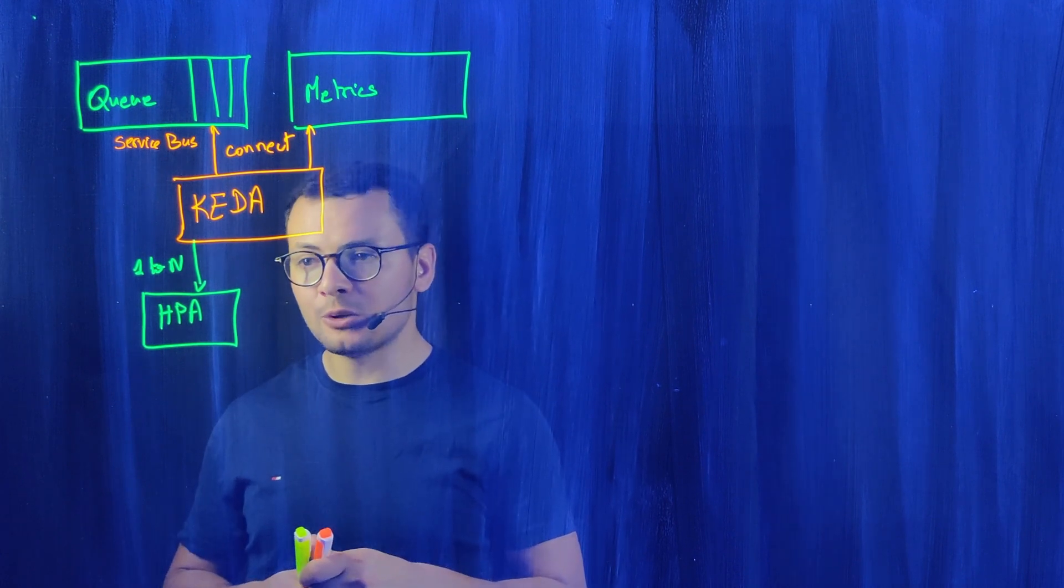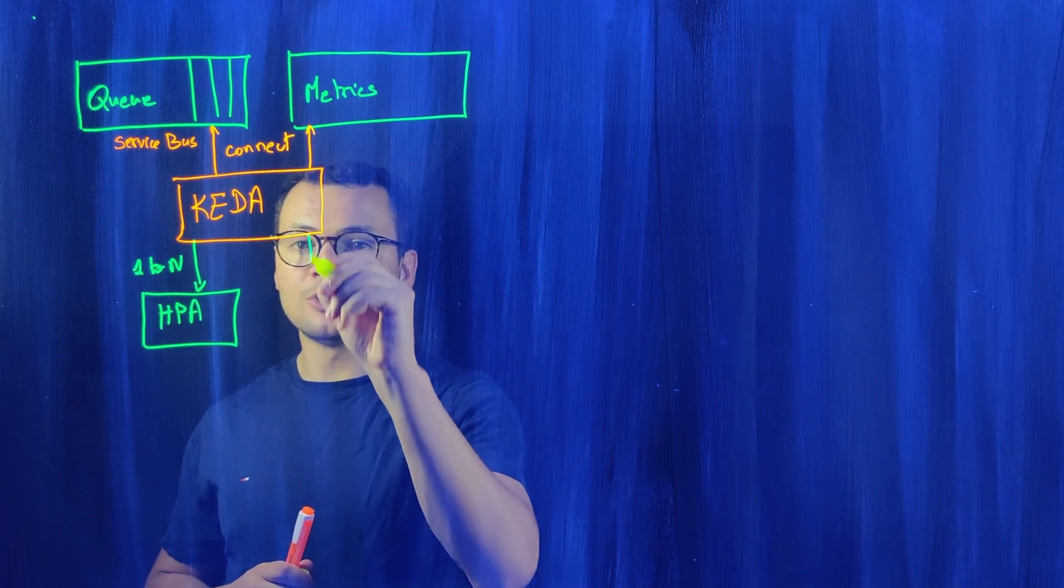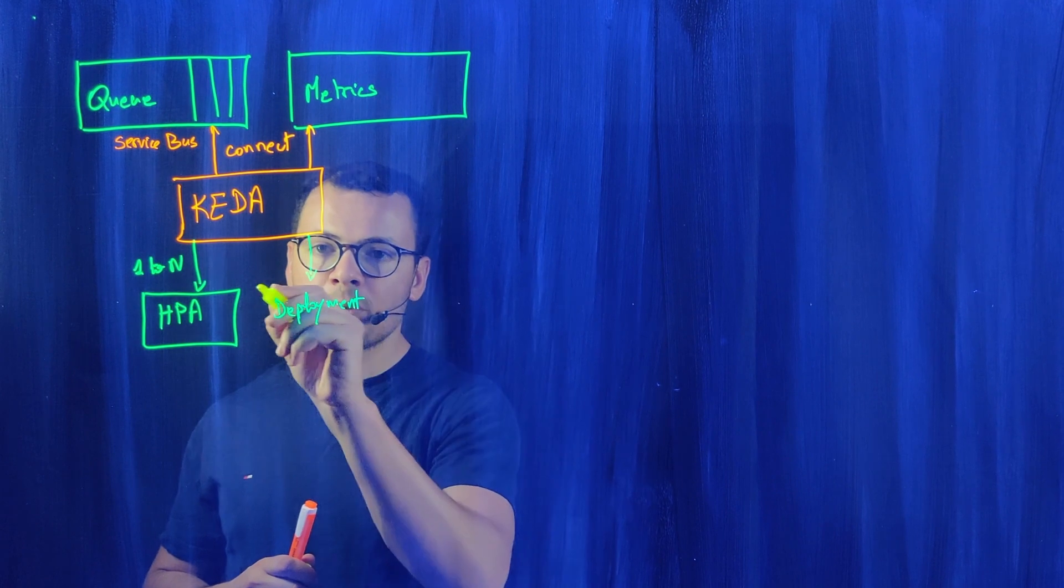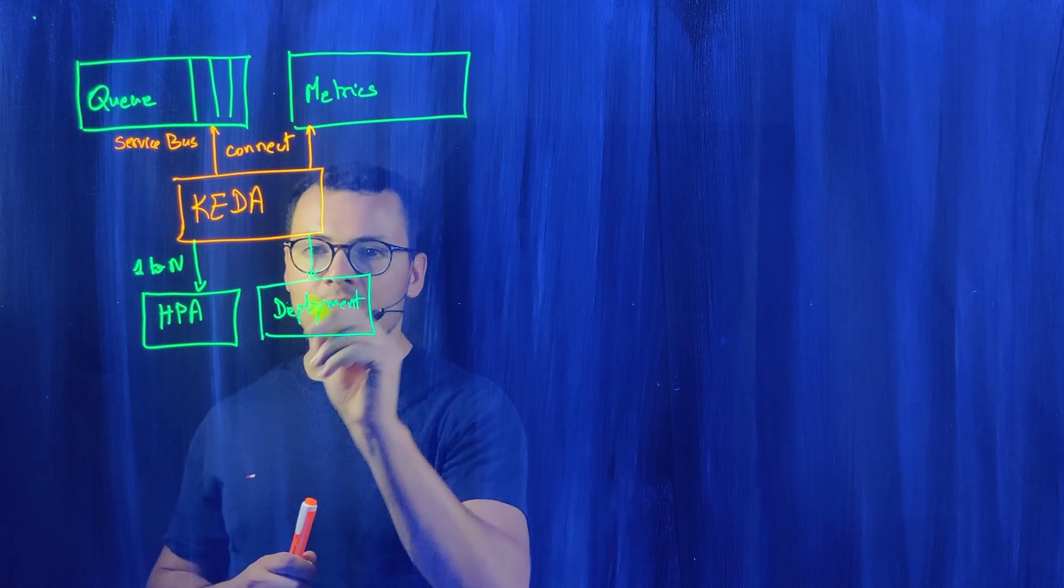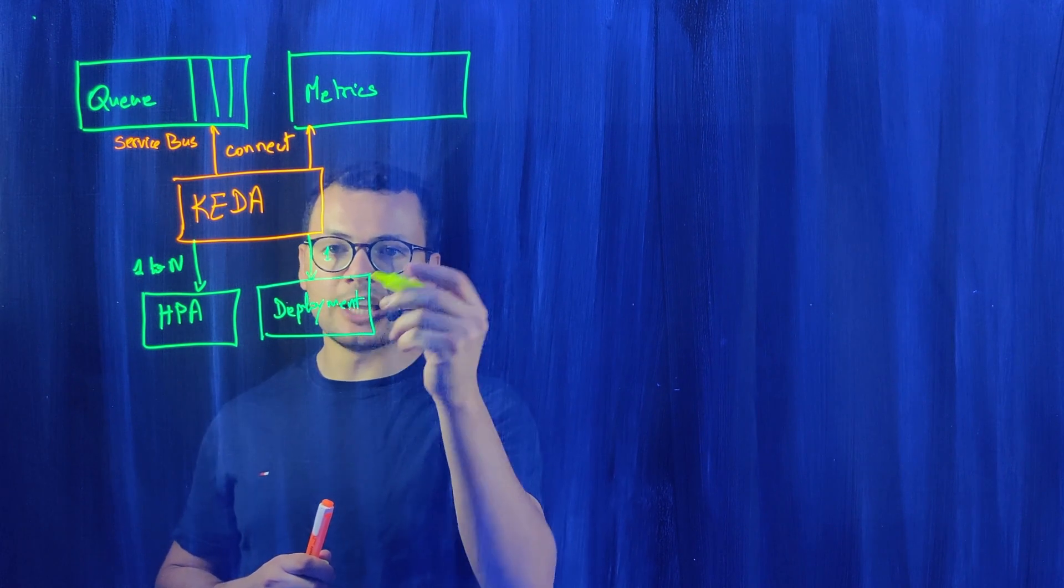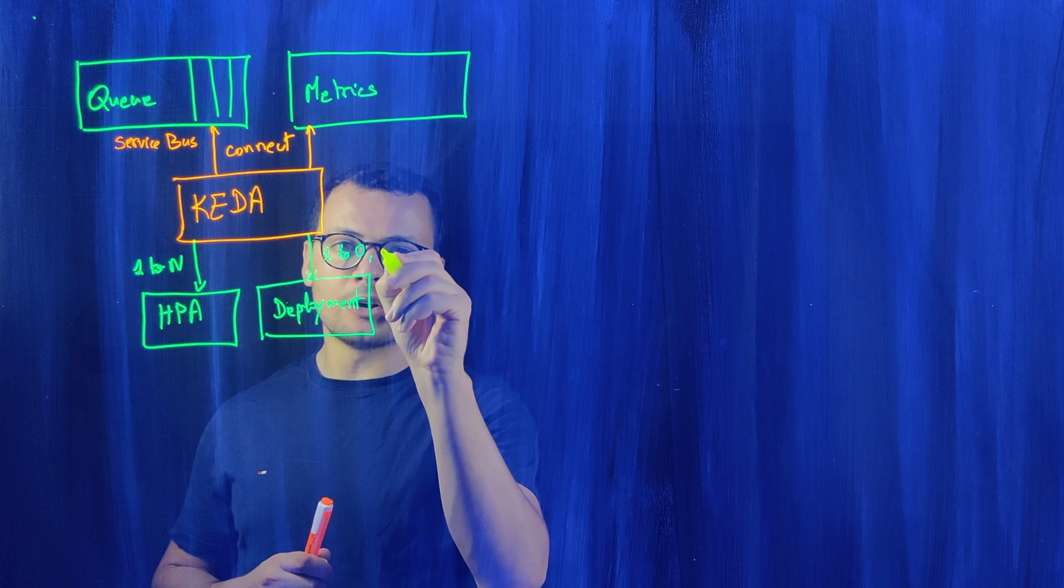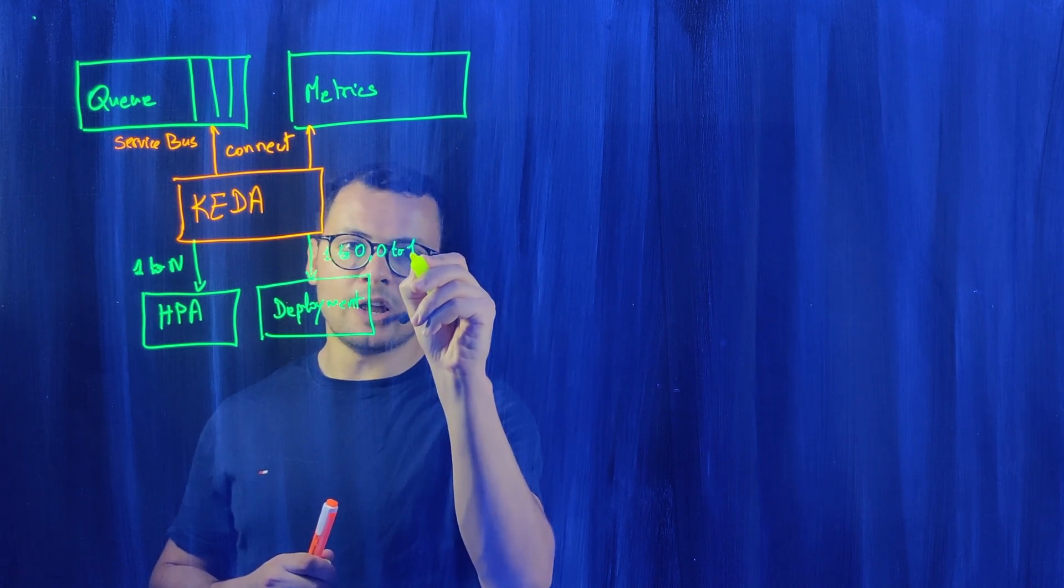So for that, what KEDA can do is act on another component of my cluster, which is the deployment. With the deployment, it will set that deployment to zero. It can tell it to create just one replica or zero replicas, or vice versa, zero to one.